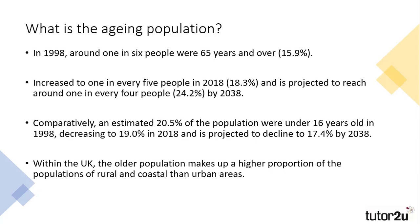The aging population refers to the increase in the average age of the UK citizen, which currently sits at 40 years of age. In 1998, around 1 in 6 people were over the age of 65, which meant that around 86% of the population was either of working age or would grow to be of working age, meaning there were enough people working to support those that weren't. This is what's called the dependency ratio.